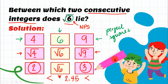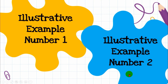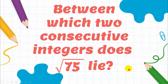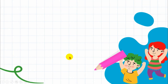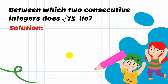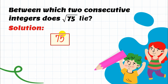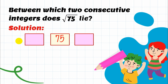Now let's go to Illustrative Example Number 2: Between which two consecutive integers does the square root of 75 lie? Don't worry about finding the consecutive integers — the important thing is that you remember the perfect square numbers. Solution: First, write 75 in the middle, then we need to write a perfect square number on each side.